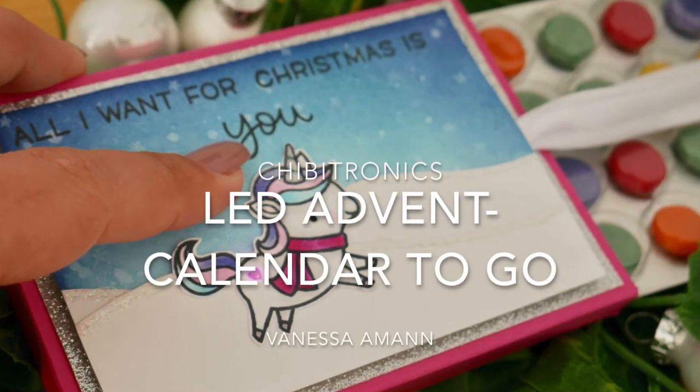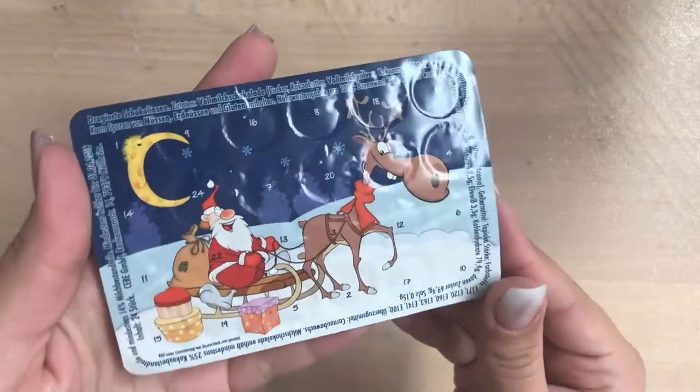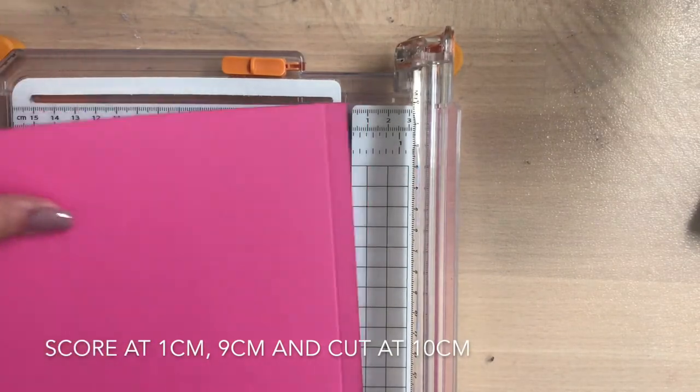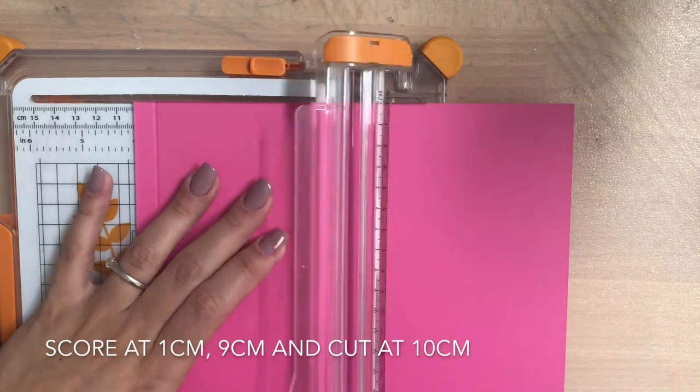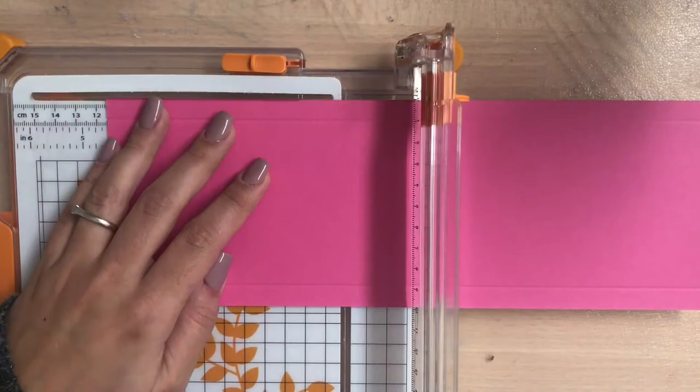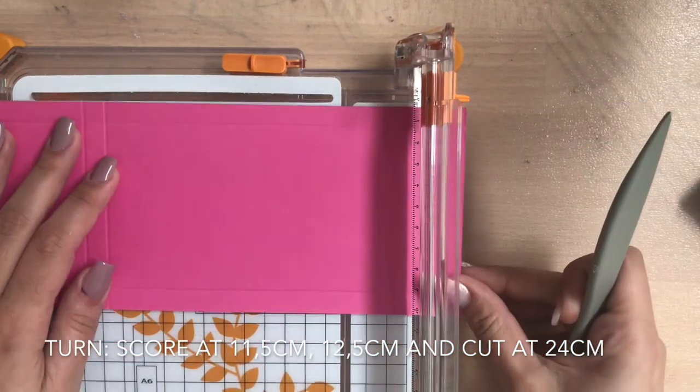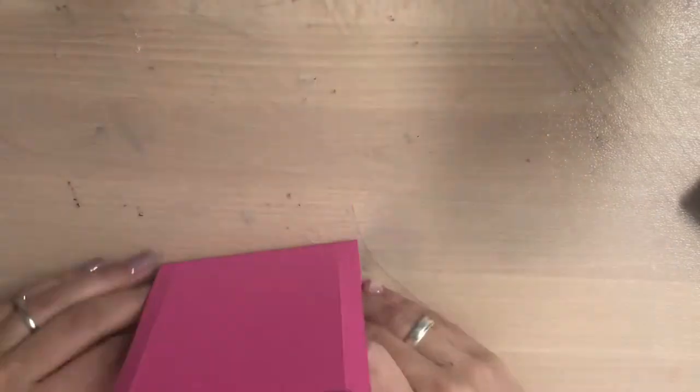Hello friends, today I'm back to share with you a really fun project. I'm making advent calendars to go, and this time I want to share an advent calendar which lights up. You have to score at 1 centimeter and 9 centimeter, and then you cut at 10 centimeter. Then you turn and score at 11.5 centimeter, 12.5, and cut at 24 centimeter.